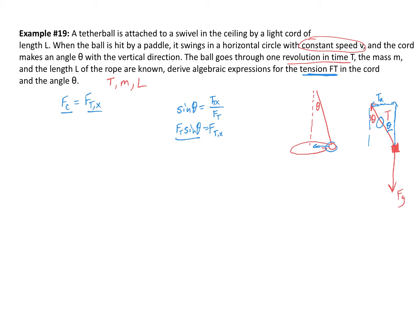Because it's centripetal force, I'm going to substitute in mv²/r. They told me constant speed v, so this is uniform circular motion. I'll put both of those in at the same time: mv²/r equals F_T sine(theta). That sine theta bothers me a little because I don't know the angle, but I'm going to leave it for now and see what happens.